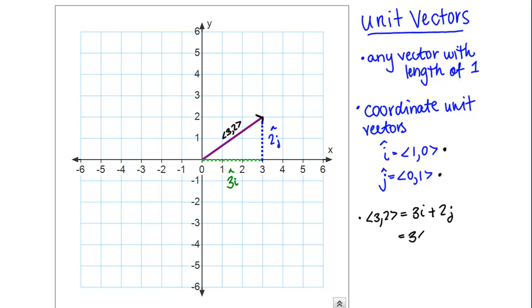Component wise, if I just substitute i in there, that's 3 times <1,0> plus 2 times <0,1>. If I work that out with scalar multiplication, that's the vector <3,0> plus the vector <0,2>.